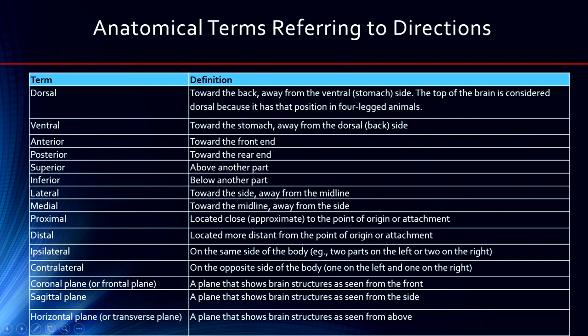Here's a full summary of the anatomical terms: dorsal, ventral, anterior, posterior; superior is above, inferior is below; lateral is towards the side, medial is towards the middle; proximal is close, distal is far; ipsilateral is on the same side of the body, contralateral is on the opposite side of the body. For example, we have contralateral control of the body — the right side of your brain controls the left side of your body. Then we have the coronal, sagittal, and horizontal planes. This is a nice summary you'll definitely want to keep handy.